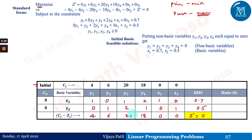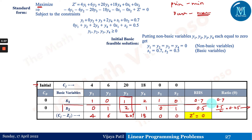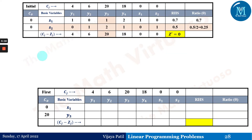The largest positive cj minus zj value is 20, corresponding to y3 — this is the pivot column. To find the pivot row, we compute the minimum ratio: 0.7 divided by 1 equals 0.7, and 0.5 divided by 2 equals 0.25. The minimum ratio is 0.25, so the second row is the pivot row. The pivot element is 2. Therefore, y3 enters the basis and s2 leaves.